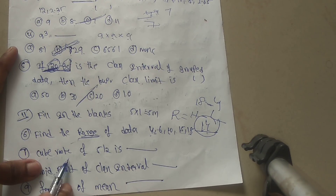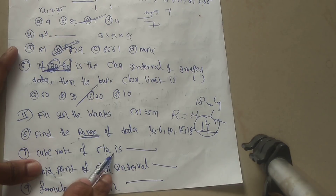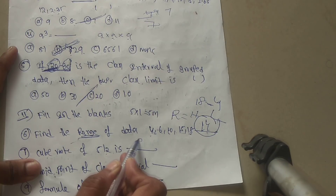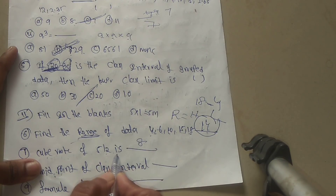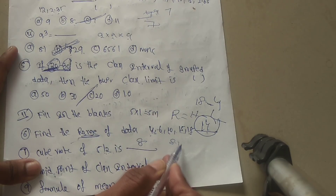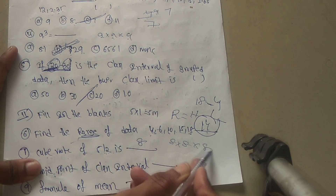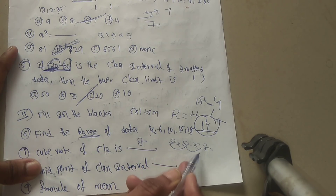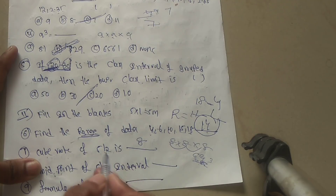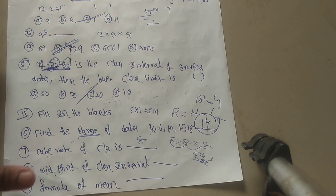Question 7: cube root of 512. The answer is 8, because 8 multiplied 3 times gives 512. 8 into 8 is 64, and 64 into 8 is 512. So the cube root of 512 is 8.